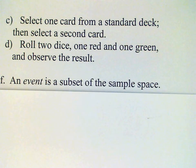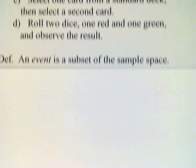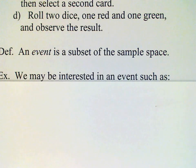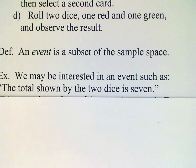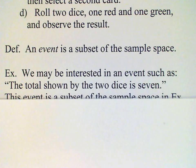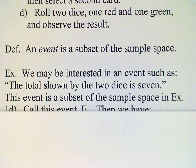Our next definition: an event is a subset of the sample space. For example, we may be interested in an event such as 'the total shown by the two dice is seven' for our last experiment. That is a set which we can easily write out.